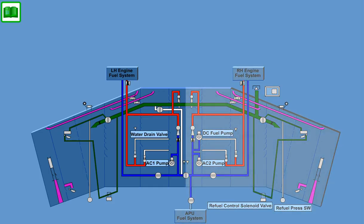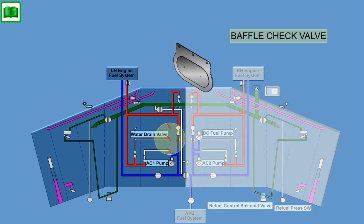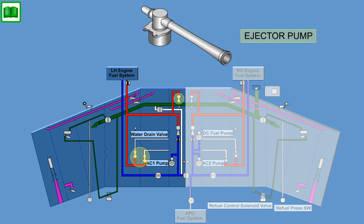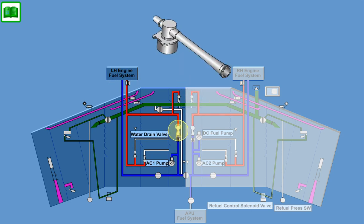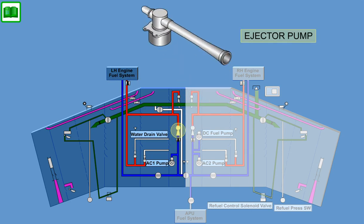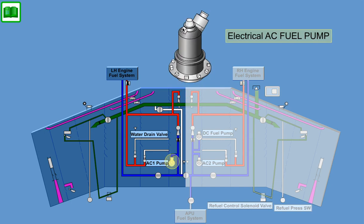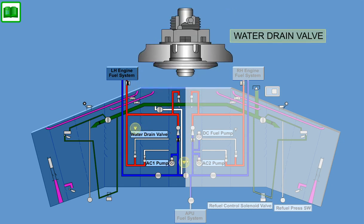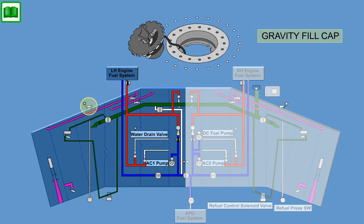Each tank contains the following equipment: baffle and flapper check valves to allow fuel towards the collector bay; three ejector pumps to assure maximum fuel availability in the collector bay; an ejector pump to feed the engine; an electrical AC fuel pump for engine starting and backup for the ejector pump; a check valve in the fuel feed line; two drain valves for water drain and fuel inspection; and a gravity fill cap.